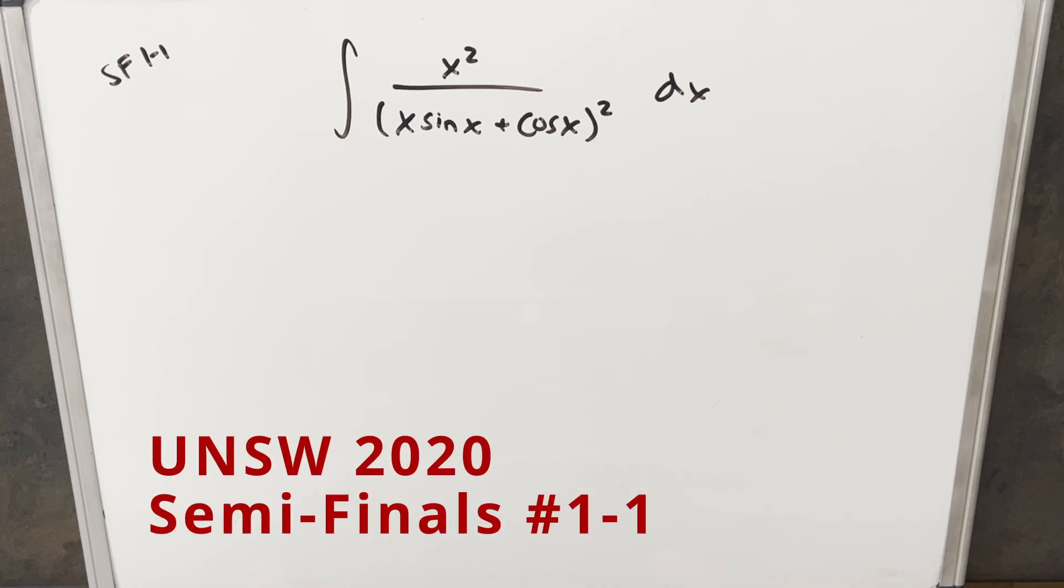Hey, we have here today another integral from the UNSW integration B from 2020. This was semi-final round one, problem one. We have the integral of x squared over x sine x plus cosine x all squared dx.